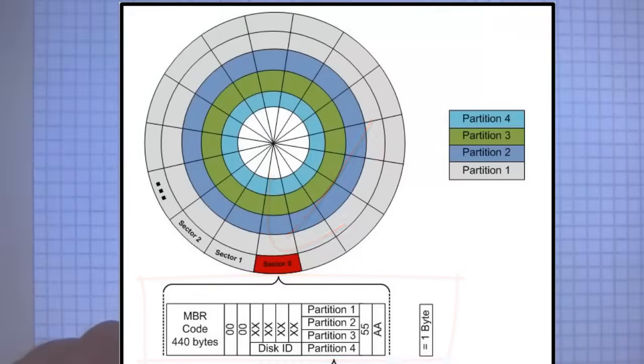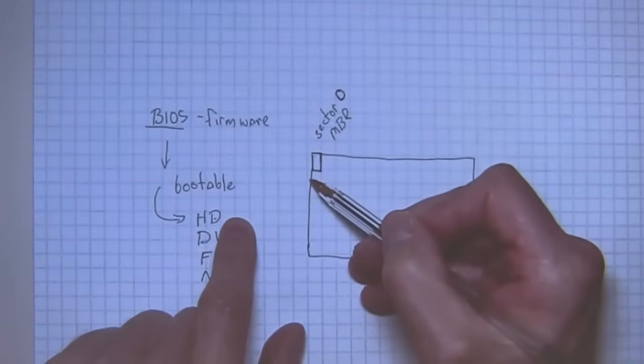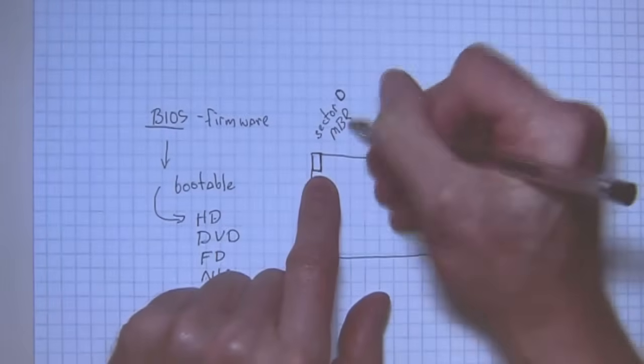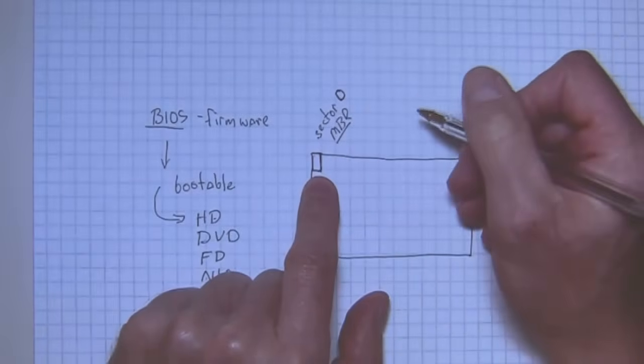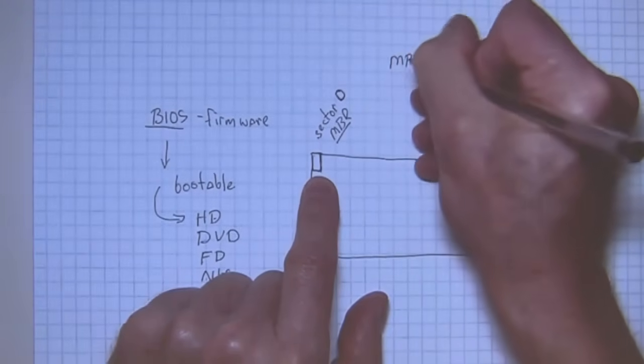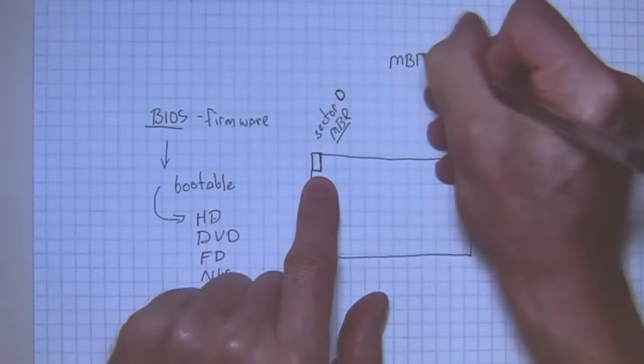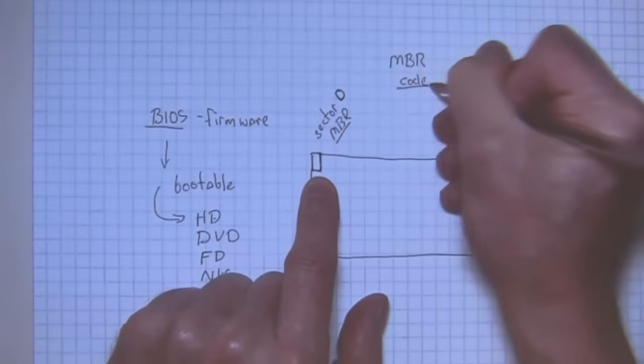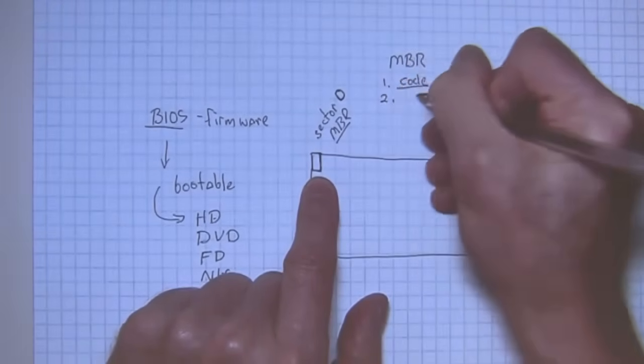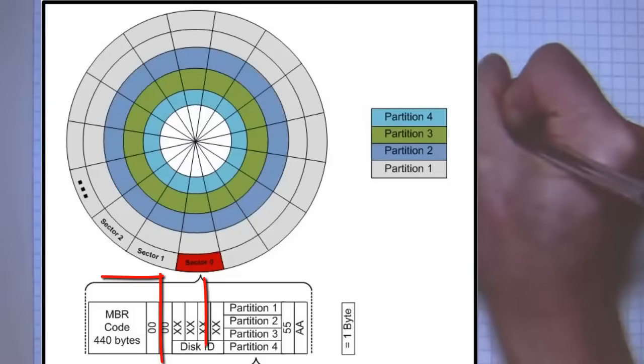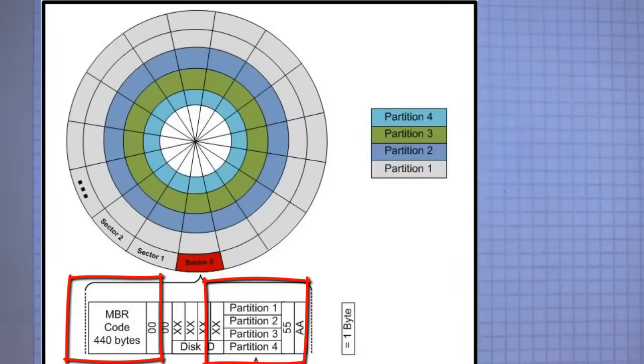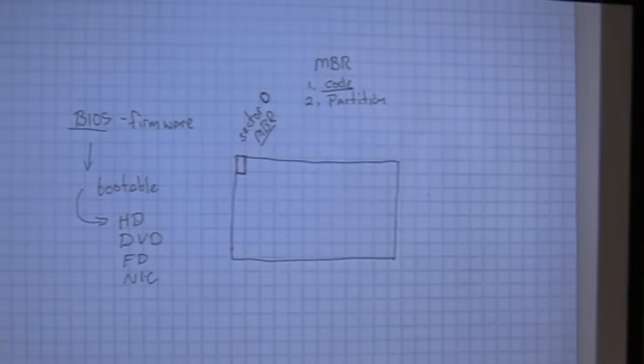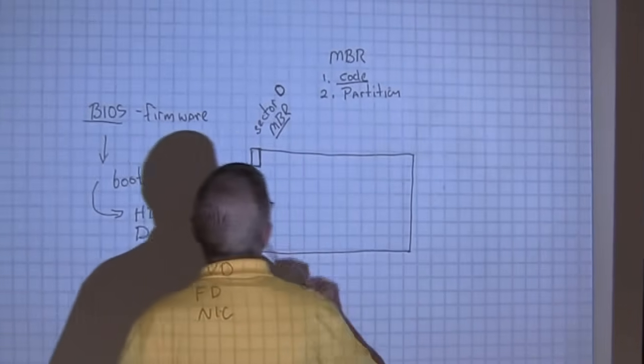BIOS locates the hard drive, finds a SATA hard drive. The first sector is read, and it is what we call the master boot record. BIOS needs to find the bootable partition.